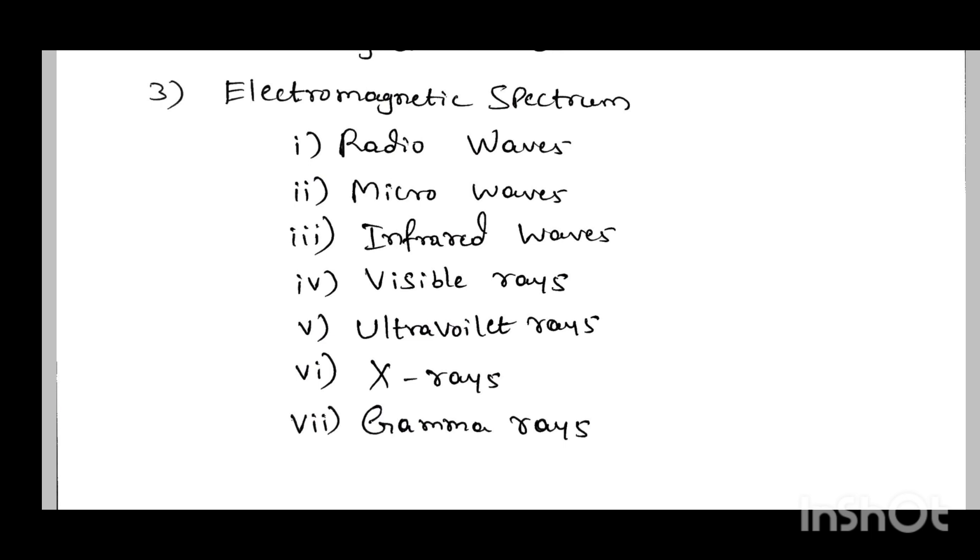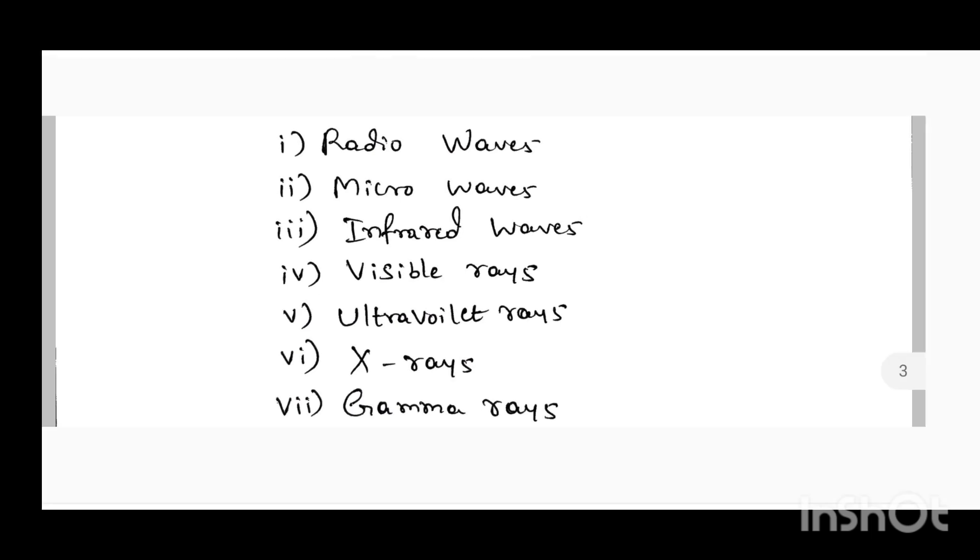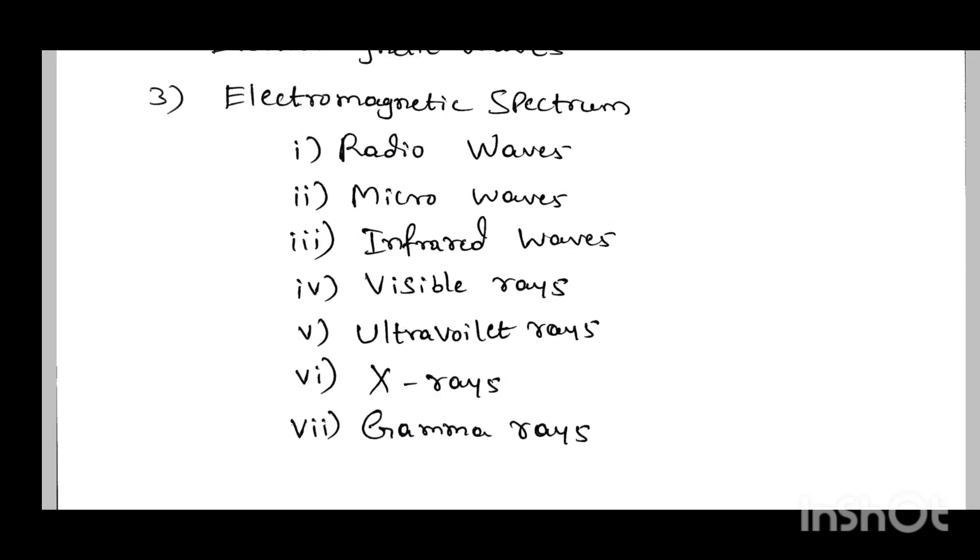All these radiations have wavelength ranges and frequency ranges. Based on frequency and wavelength, the nature and characteristics of each wave depends. Each radiation has its own applications in day-to-day life, which you should be able to answer about.